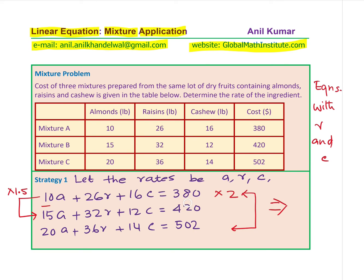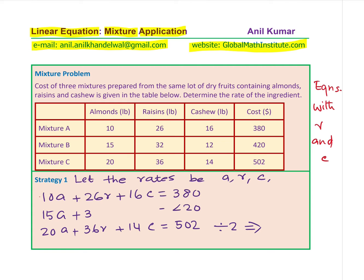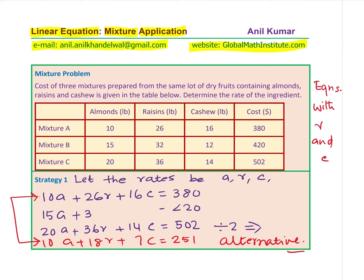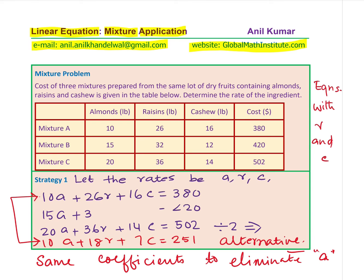Since we are using calculators, big numbers are not a concern. Another efficient way could be to divide the second equation by 2 instead of multiplying the first by 2. If you do that, the equation becomes 10a + 18r + 7c = 251. The key principle is: multiply or divide to make the same coefficients in order to eliminate a variable — in this case, 'a'.